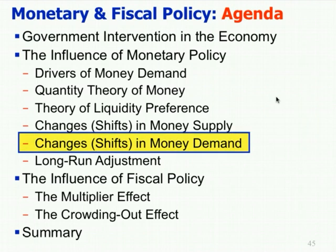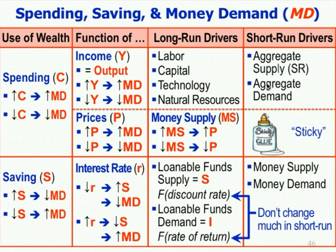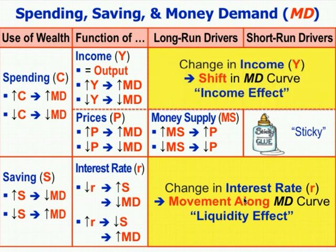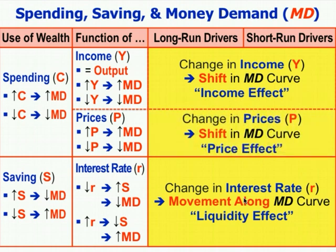What about shifts in the money demand curve? The primary drivers are income and price level. Changes in the interest rate cause movement along the money demand curve — that's the liquidity effect, movement along the curve for a changing interest rate. A change in income is a shift in the money demand curve — it's not reflected in the vertical axis. Income goes up, money demand goes up, so that's a shift to the right called the income effect. A change in prices also shifts the money demand curve — that's called the price effect: increased price level equals increased money demand.